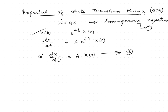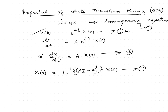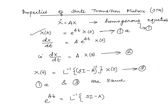Hence x(t) = e^(At) x(0) is a solution for x-dot = Ax, so our assumption is right. In the previous class we have seen x(t) is nothing but the Laplace inverse of (sI - A)^(-1) into x(0). We have seen that this is also a solution for x-dot = Ax.